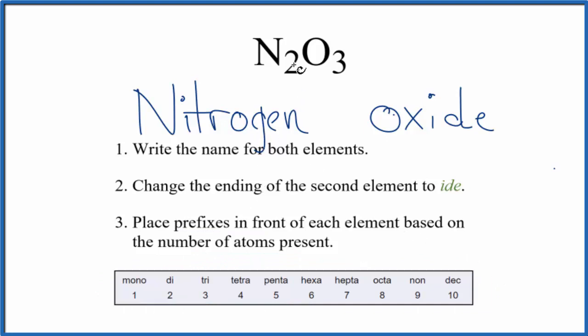So nitrogen, we have two of those. That's going to be dinitrogen. Then we have three oxygen atoms. So we're going to put tri in front of the oxide.